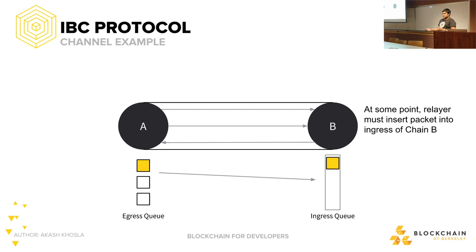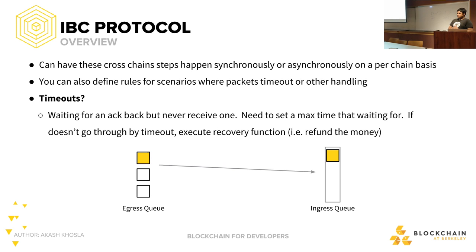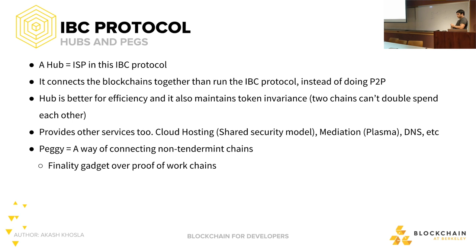Other benefits of Tendermint include not killing the environment. Question about how the hub prevents double-spend: the hub prevents double-spend between the chains that are connected to it. It knows the current supply of Ethereum, or more easily explained with non-fungible tokens: it knows that this non-fungible token exists on Ethereum, and that Ethereum sent that token to Ethereum Classic.